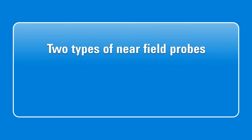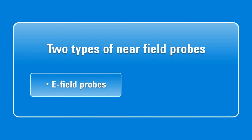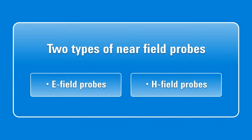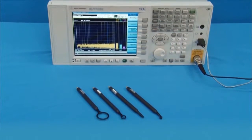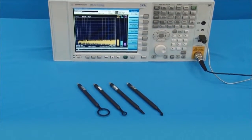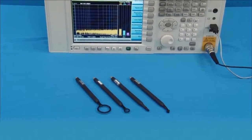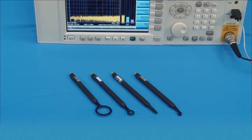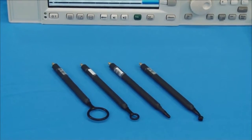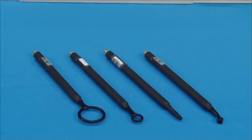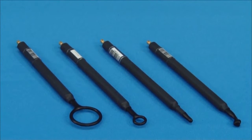There are two types of near-field probes. One is E-field probes which detect electric field. The other is H-field probes which detect magnetic field from emission sources. H-field probes are more commonly used to locate emission sources in near-field tests because the H-field fades faster than the E-field as the distance increases. In other words, H-field probes provide better resolution.